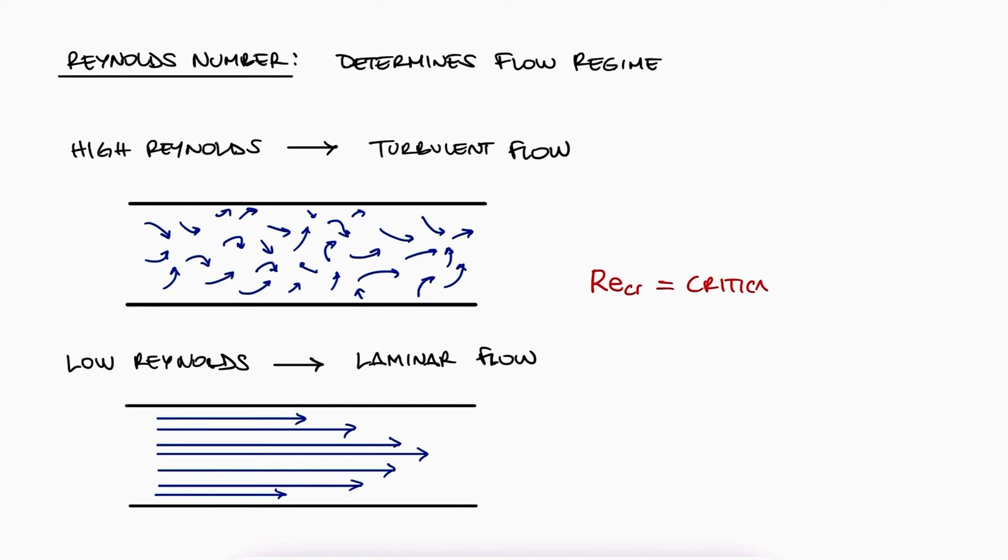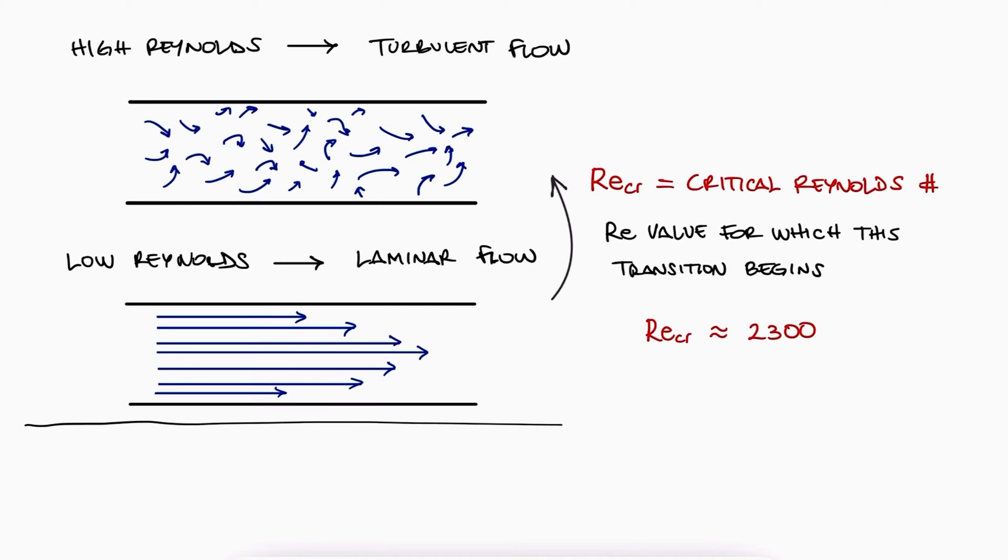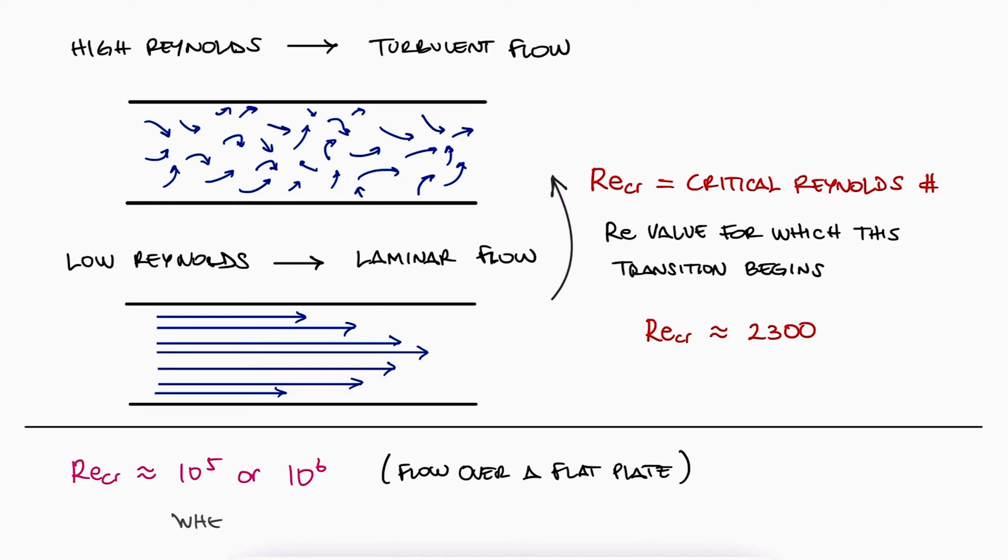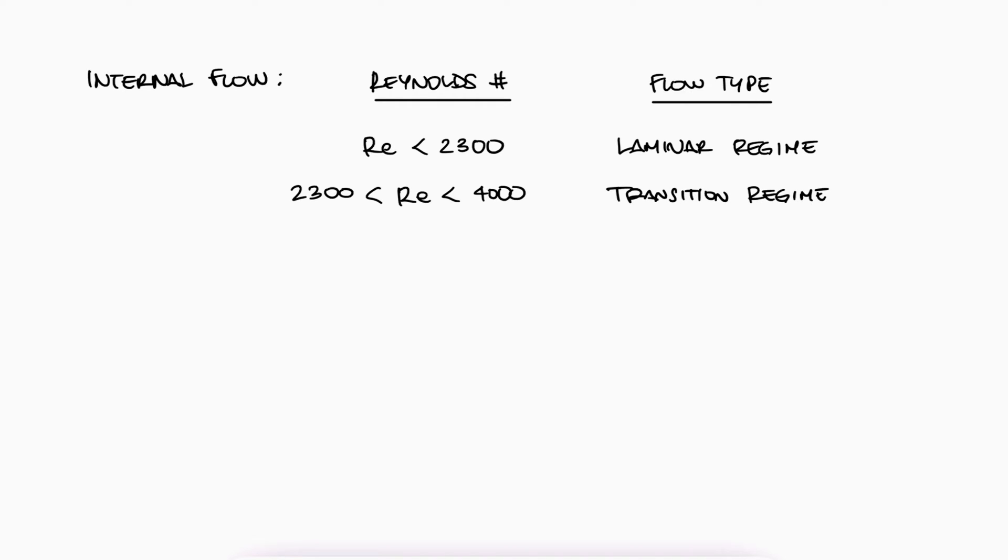The critical Reynolds number is the value where the laminar to turbulent transition begins. This value is about 2300 for pipe flow, while it can be 10^5 or 10^6 for flow over a flat plate. For internal flow, Reynolds less than 2300 indicates laminar flow, between 2300 and 4000 is the transition regime, and greater than 4000 is fully turbulent. Conservatively, 2000 is sometimes used for fully developed laminar flow.